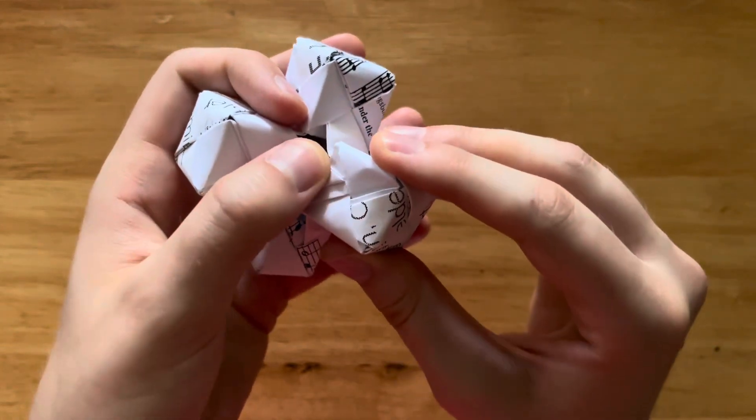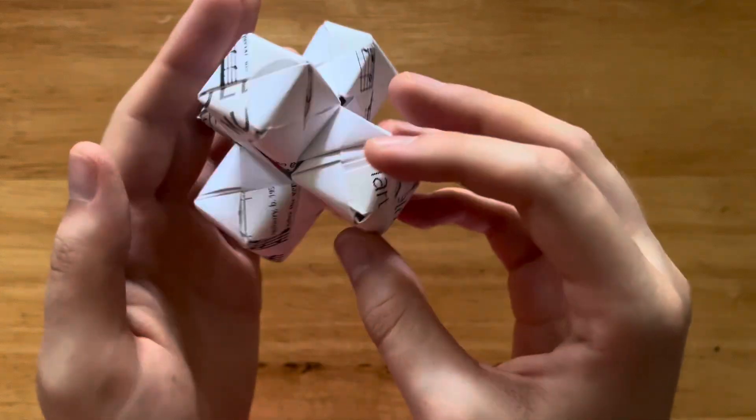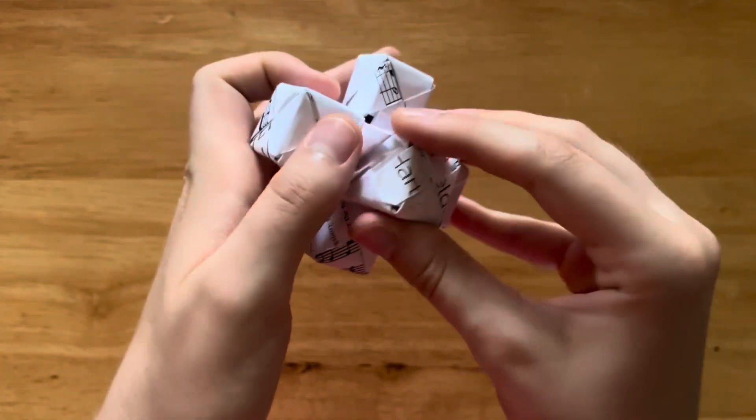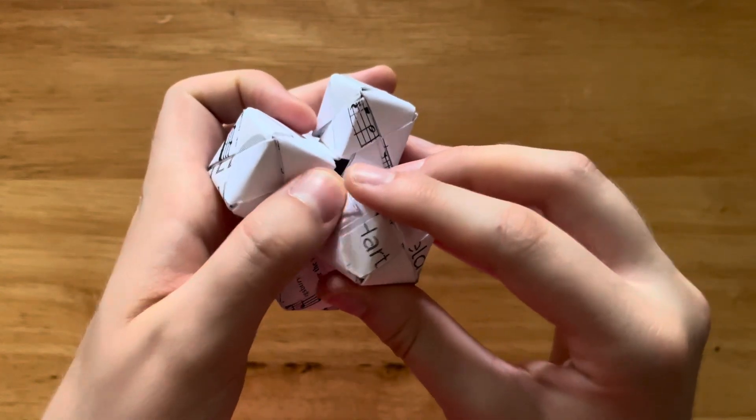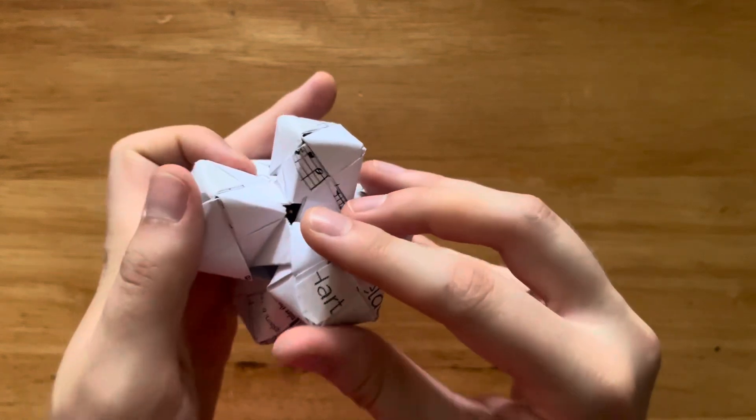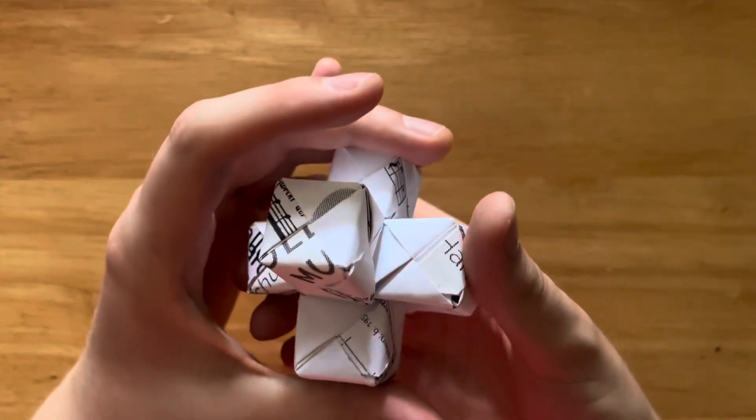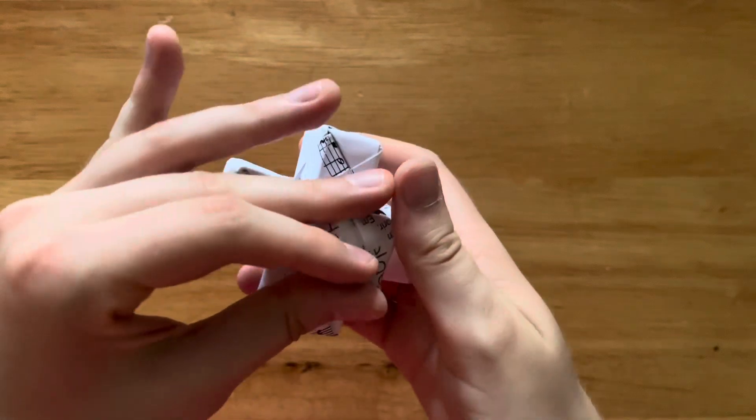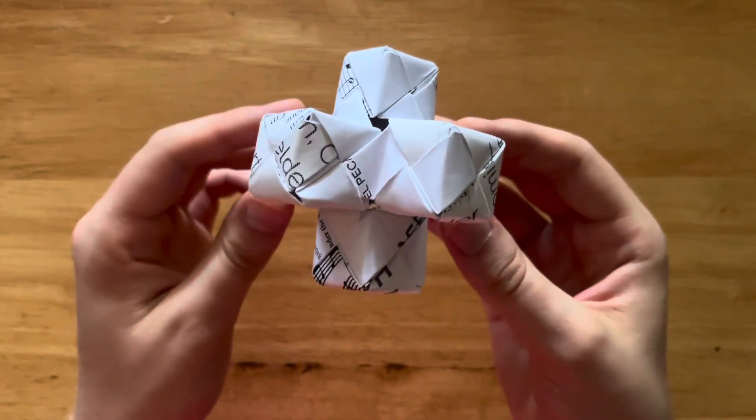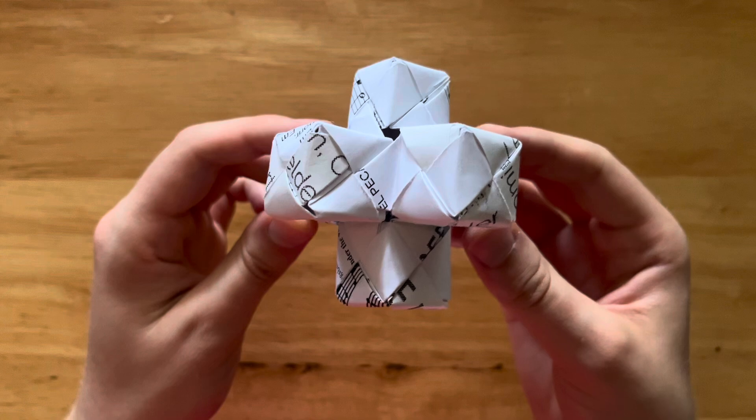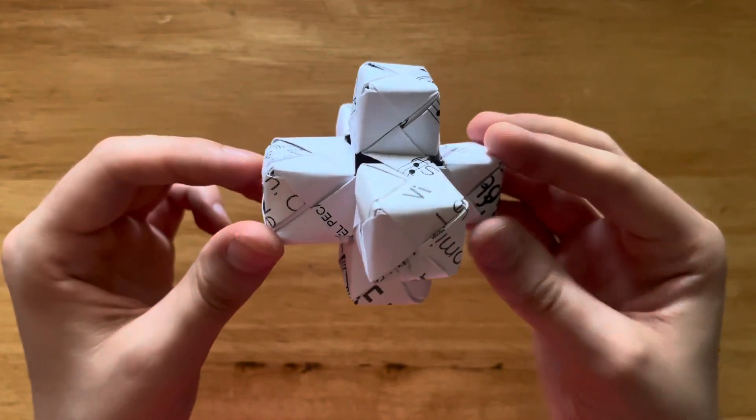And then flap in pocket. And then there it is. Flap in pocket. There we go. And with that, we have our beautiful, very wonky looking extended cube.